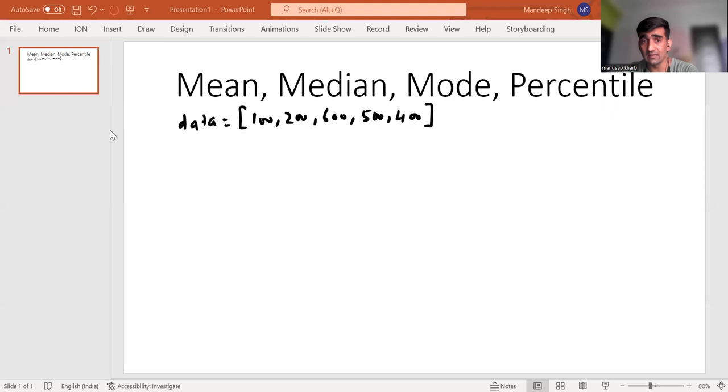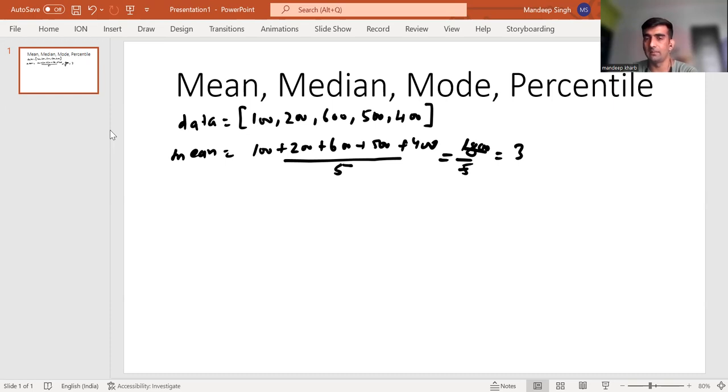So in this case, our mean is like we have five data points: 100 plus 200 plus 600 plus 500 and then plus 400, and then divide by 5. So if we take it would come around 1800 divided by 5, which will come to 360. So this is our mean in this case.